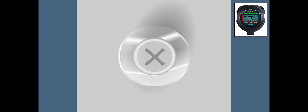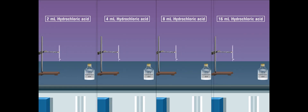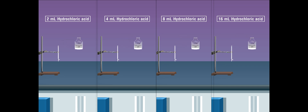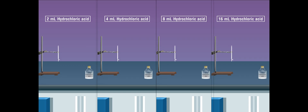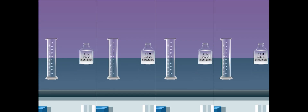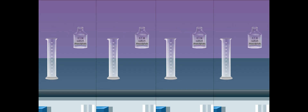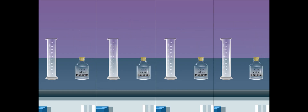Go on observing from the top of the flask and stop the stopwatch when the cross mark just becomes invisible. Note down the time. Repeat the experiment by adding 2 milliliters, 4 milliliters, 8 milliliters, and 16 milliliters of 1.0 molar hydrochloric acid solution to fresh sodium thiosulphate solution every time, and record the time required for the disappearance of the mark X in each case separately.